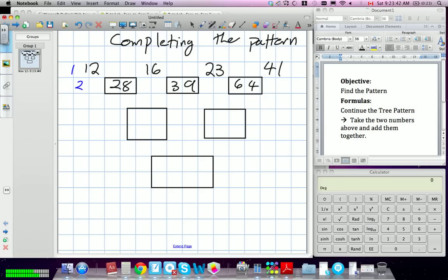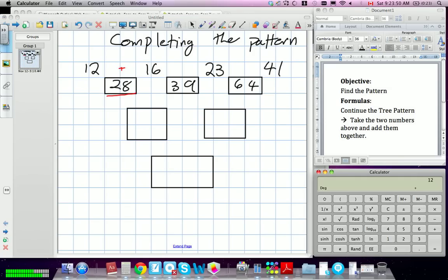We add 12 plus 16. That's right. The numbers that you've given us above, if we add them together, we're going to get our number in between. So for instance, we took 12 plus 16, 28, we got that one.